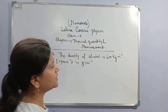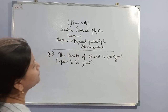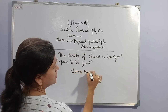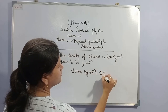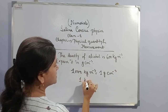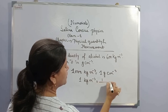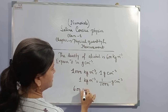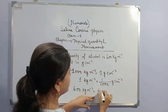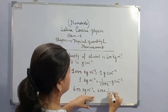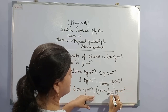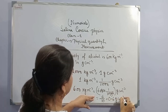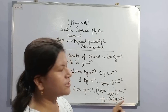Question number 4: the density of alcohol is 600 kg per cubic metre. Express it into gram per cubic centimetre. We know that 1000 kg per cubic metre equals to 1 gram per cubic centimetre, so 1 kg per cubic metre equals to 1/1000 gram per cubic centimetre. Therefore 600 kg per cubic metre equals to 600 × (1/1000) gram per cubic centimetre, which equals 0.6 gram per cubic centimetre.